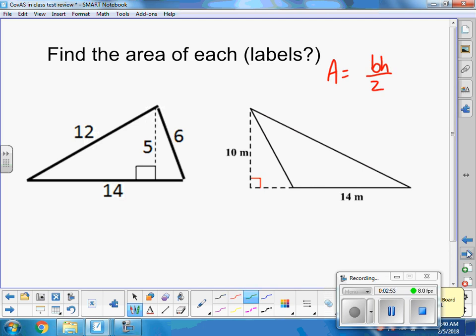We're going to trust our formula. Base is 14 times our height, which is 5. Again, we're looking for that perpendicular piece. We're not going to use the side lengths unless it's perpendicular. So I'm going to take 14 times 5 and I get 70, then divide by 2, and I get 35. I have no measurements, so 35 square units.